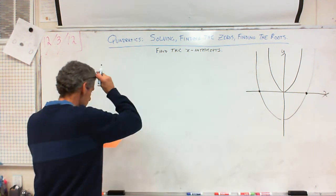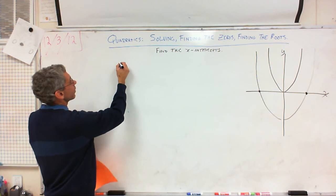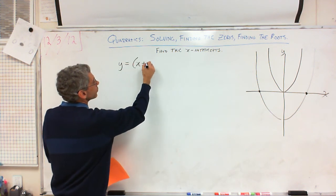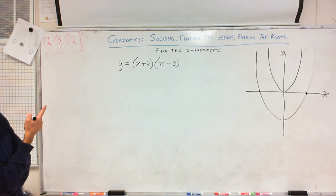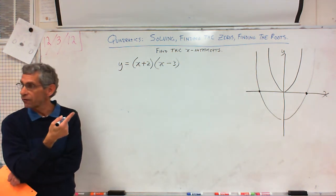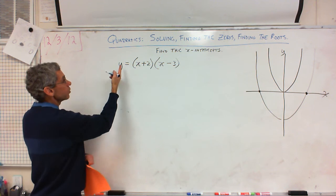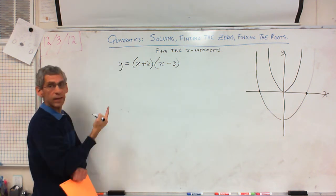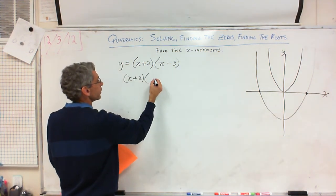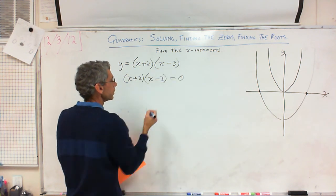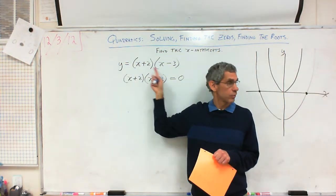So if I gave you something like y equals (x+2)(x-3), and asked you to solve — find the zeros, find the roots — you are asked to find what x is when y equals zero. So I'm going to rewrite it: (x+2)(x-3) equals zero. I have now created something I can solve for x, because up here I can't — there are two unknowns and only one equation.